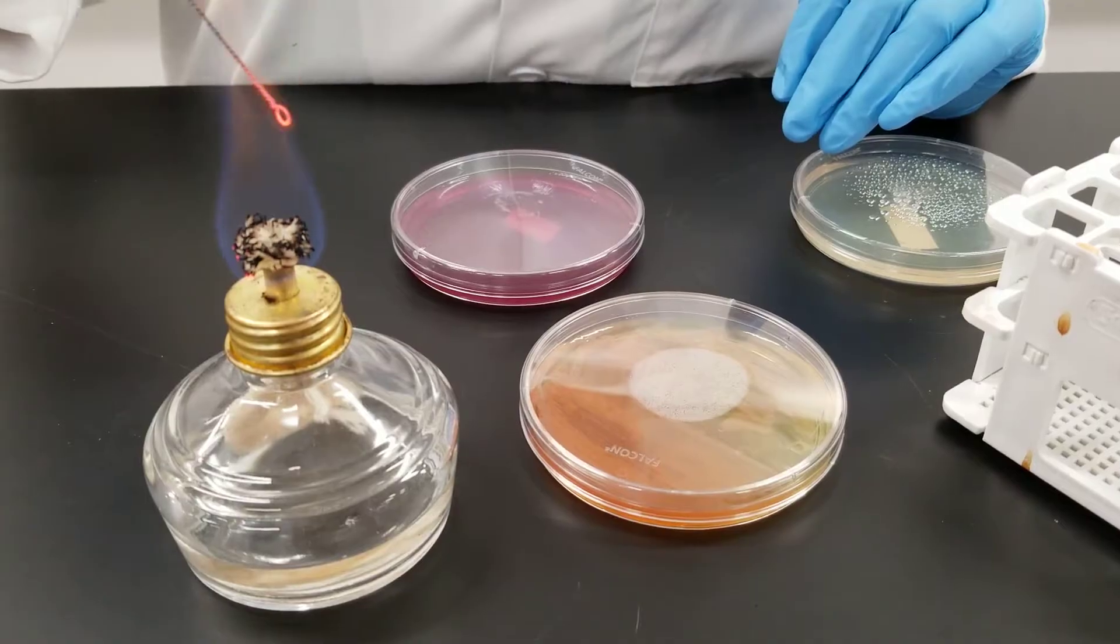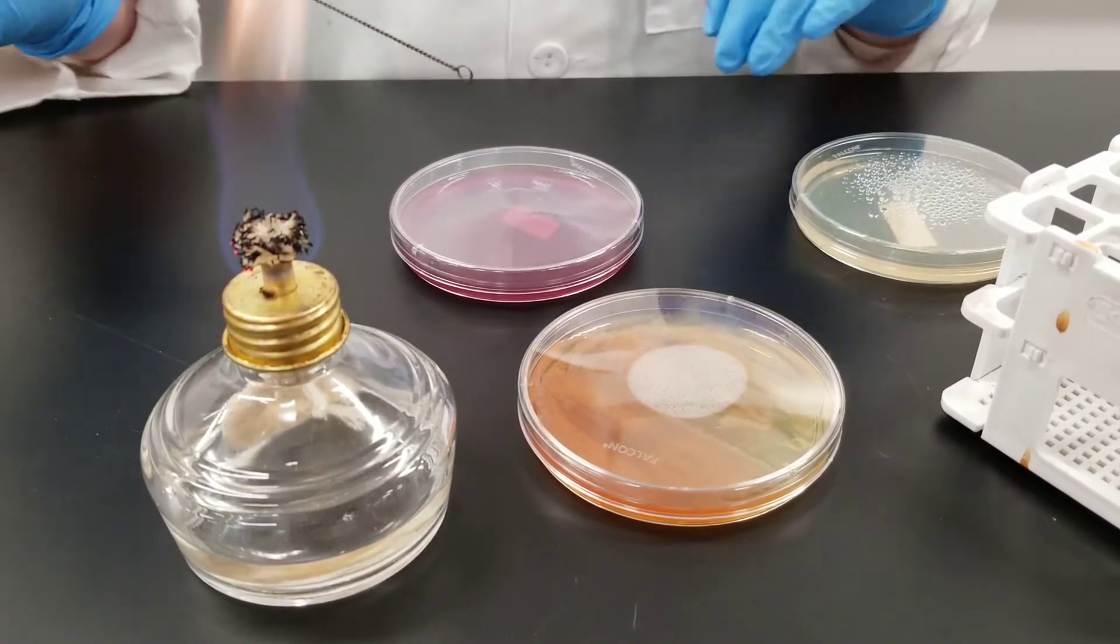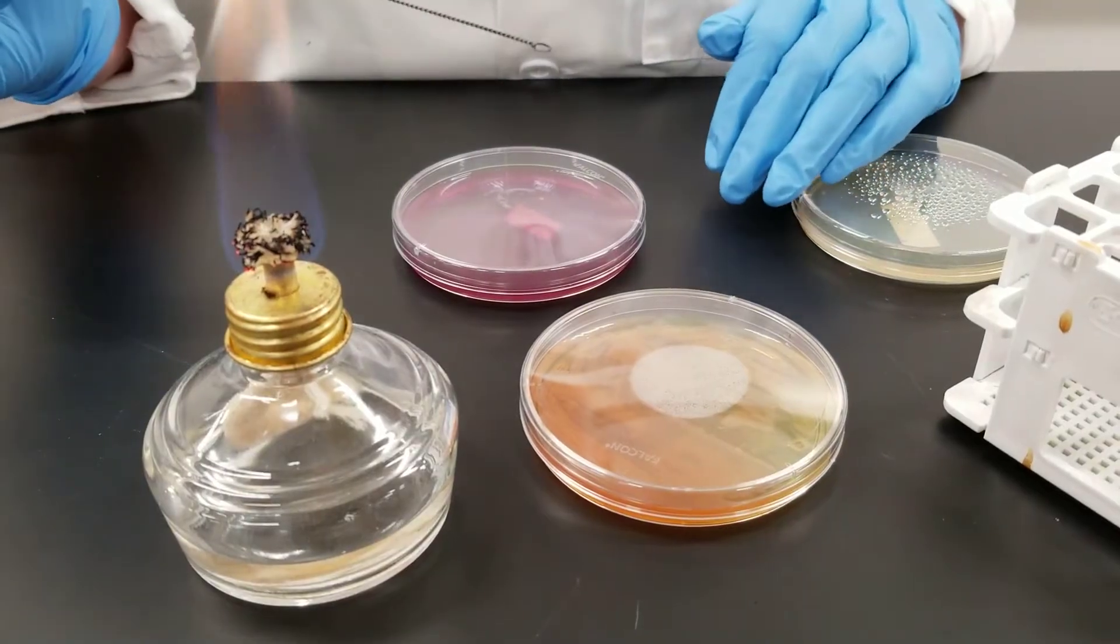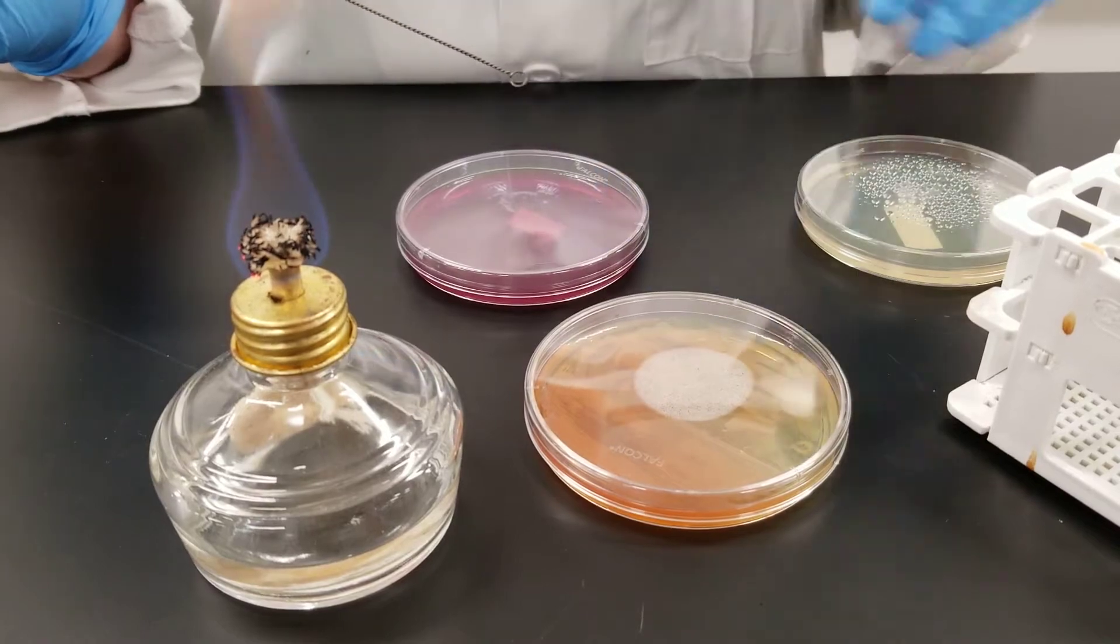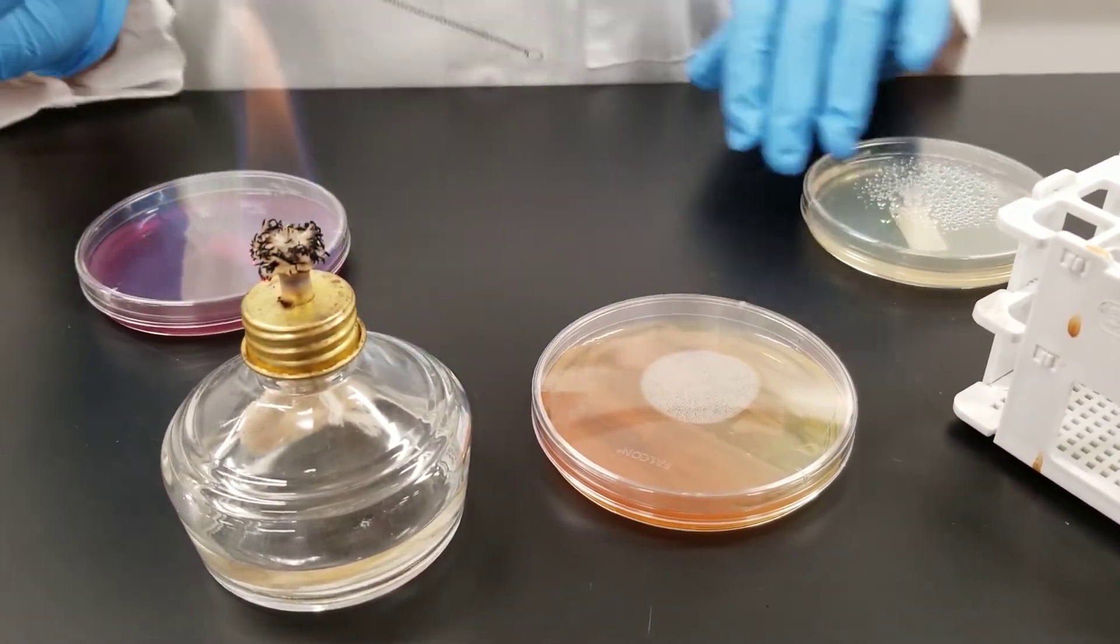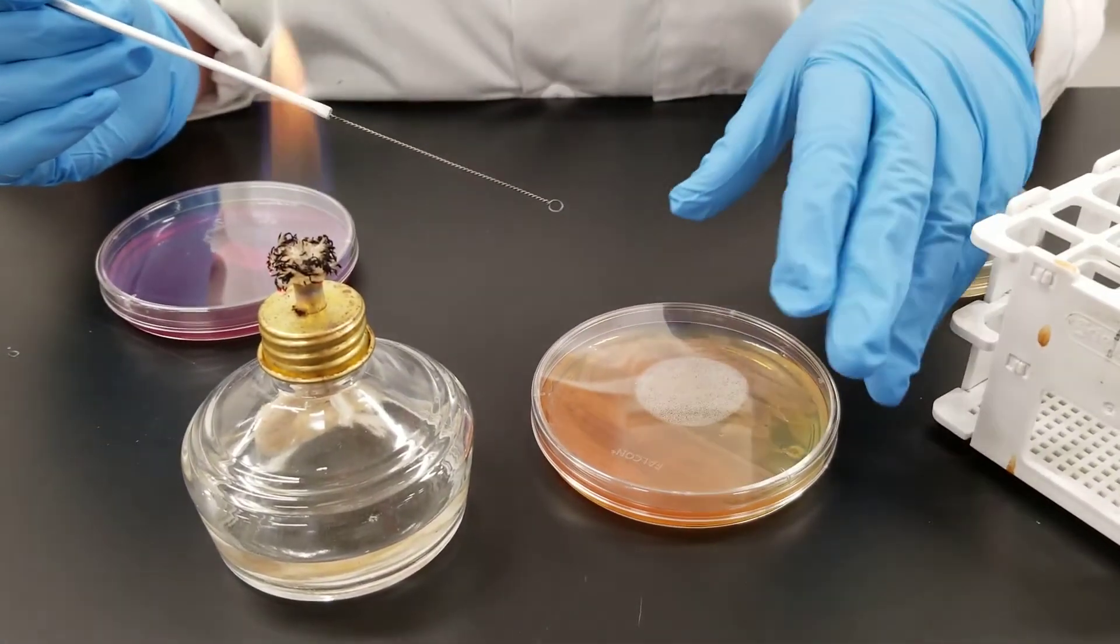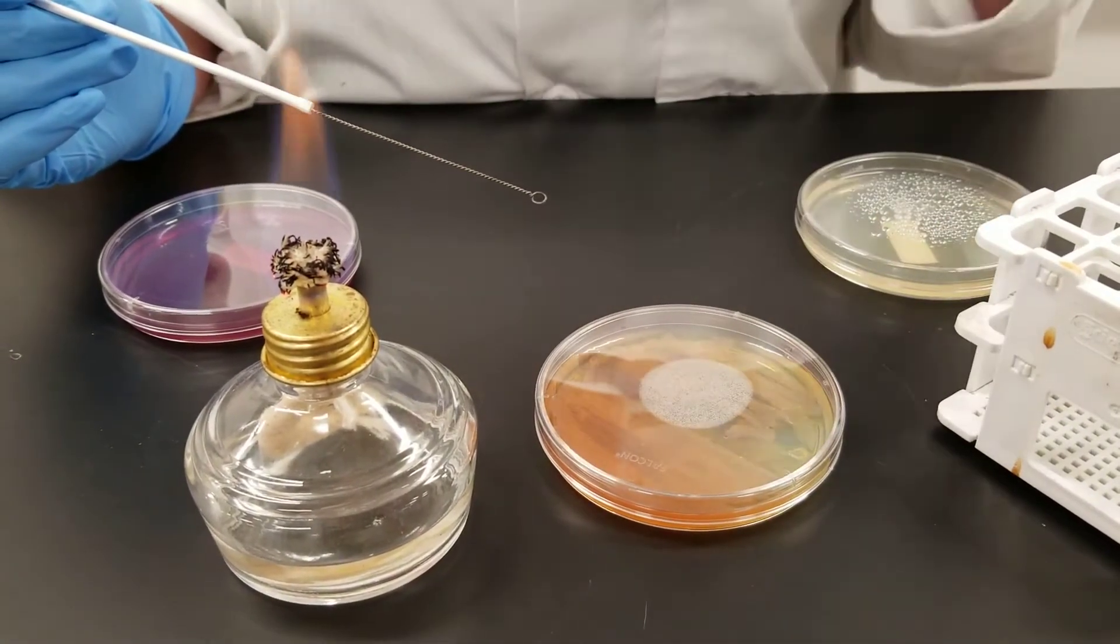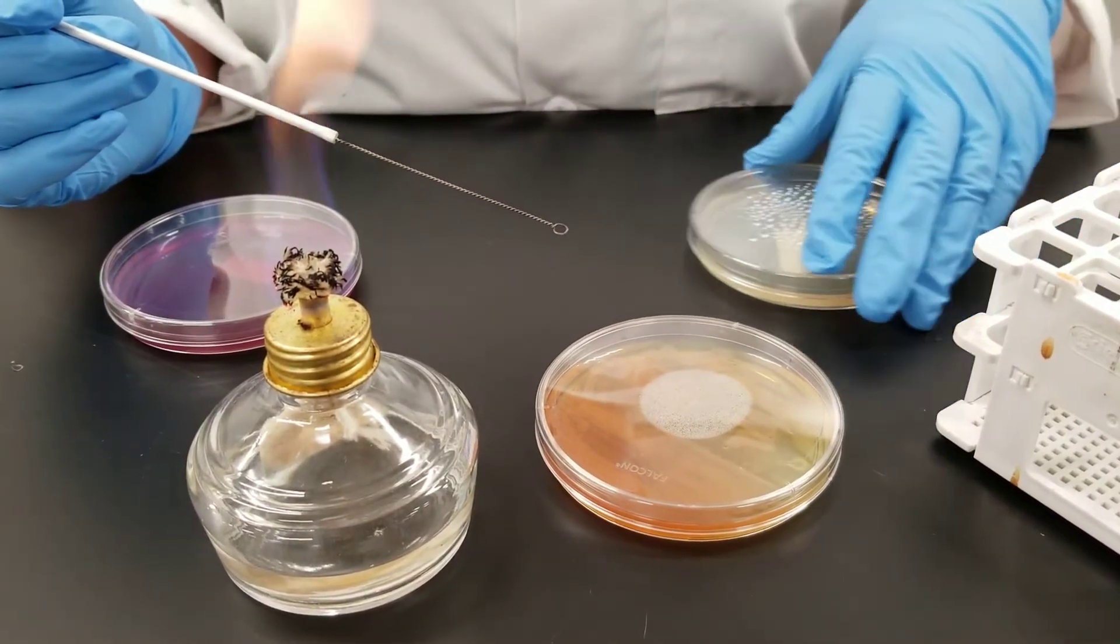Hold it in the flame for a bit, then let it cool. You do not want to go directly into the sample because you will basically hear a sizzling which means you've just killed everything. So let it cool a bit. Do not be waving it around in the air because you can pick up contamination. You always want to be working within six to eight inches of your flame. That is considered your sterile area. You move way outside of that and you're no longer in the sterile area.